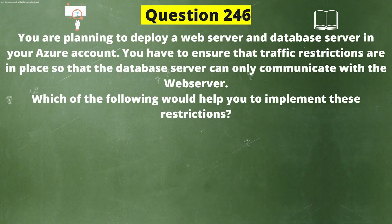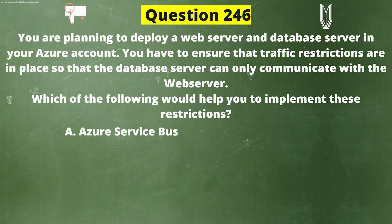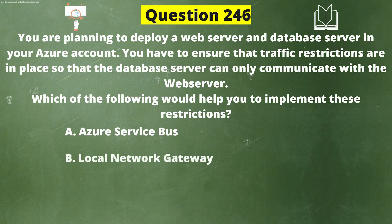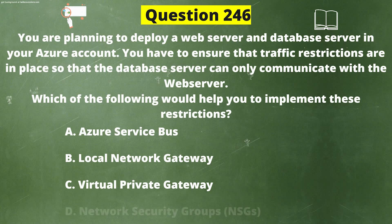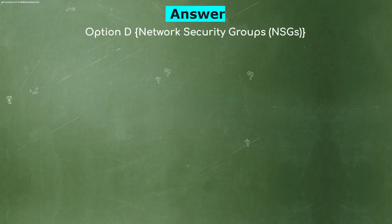Next question. You are planning to deploy a web server and database server in your Azure account. You have to ensure that traffic restrictions are in place so that the database server can only communicate with the web server. Which of the following would help you implement these restrictions? Option A: Azure Service Bus. Option B: Local Network Gateway. Option C: Virtual Private Gateway. Option D: Network Security Groups (NSGs). The correct answer is Option D, Network Security Groups (NSGs).